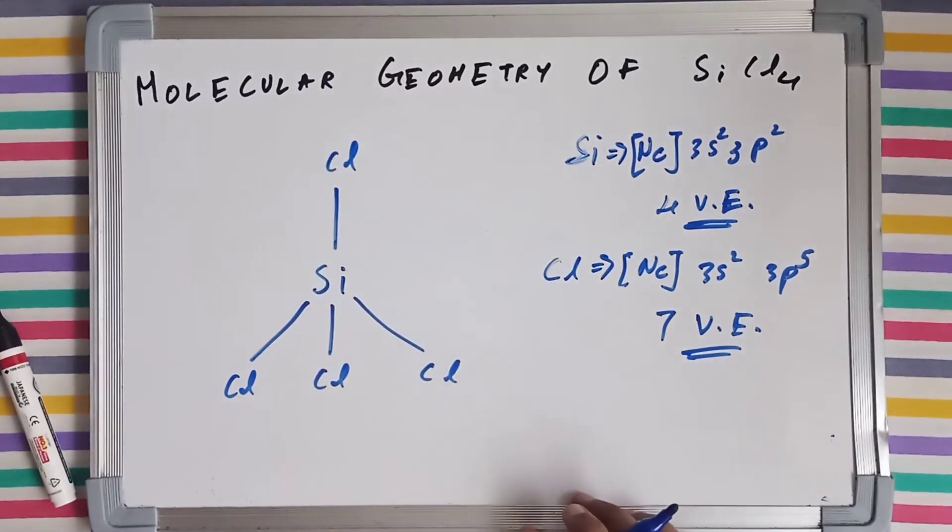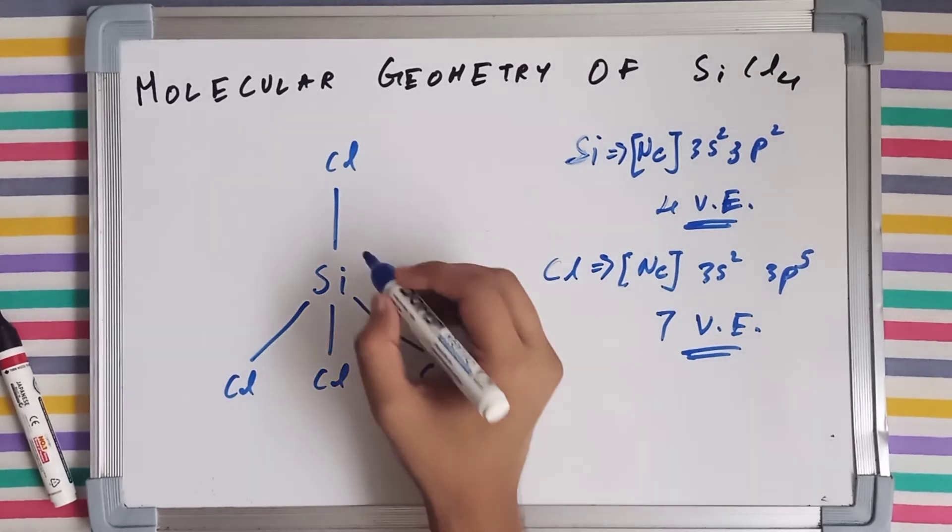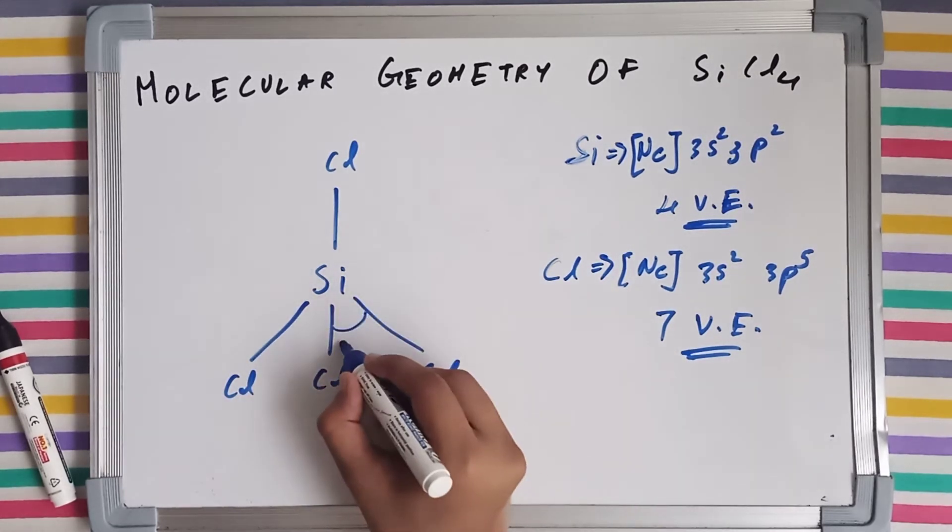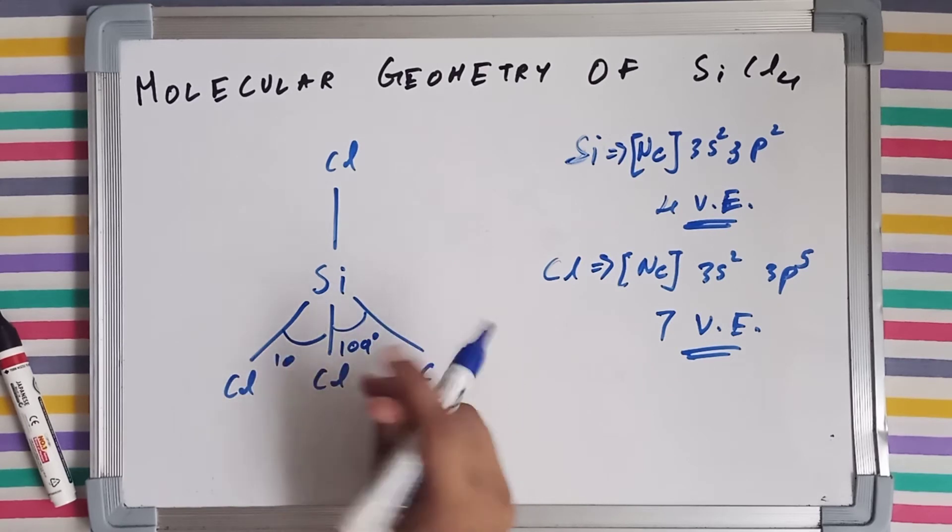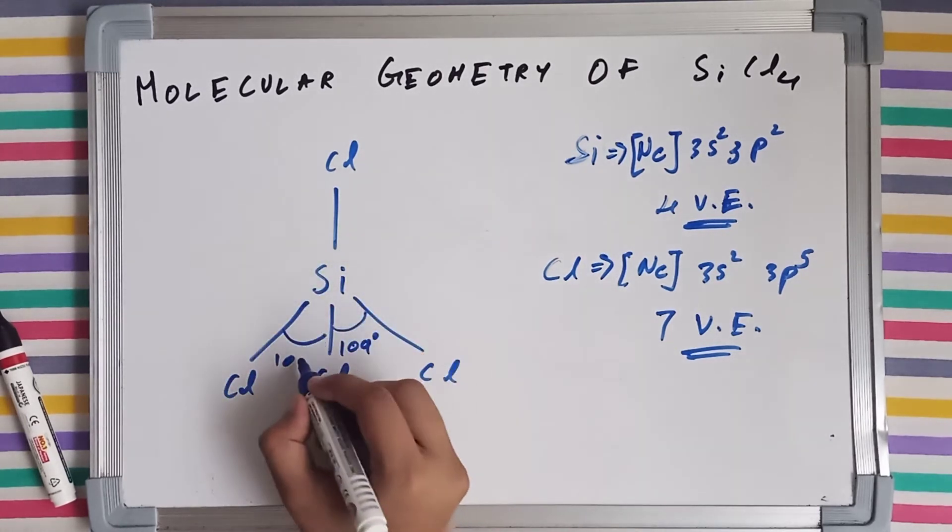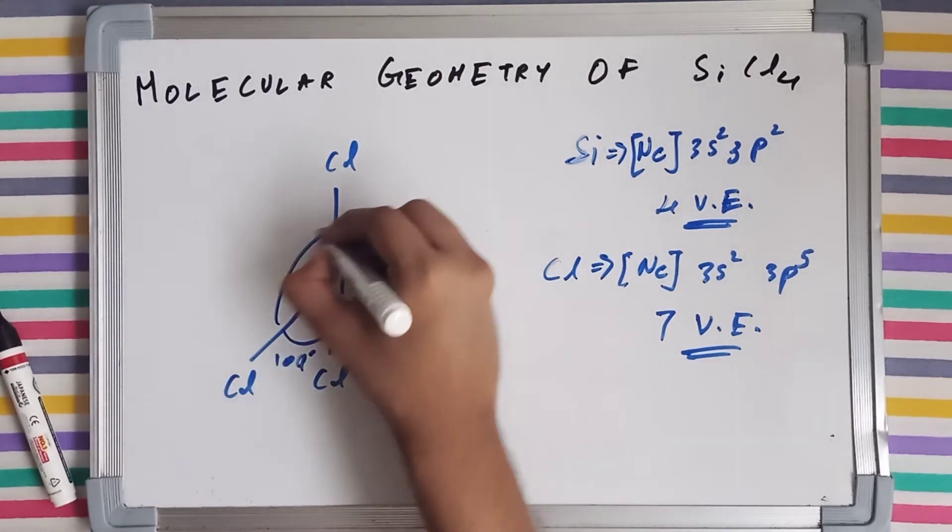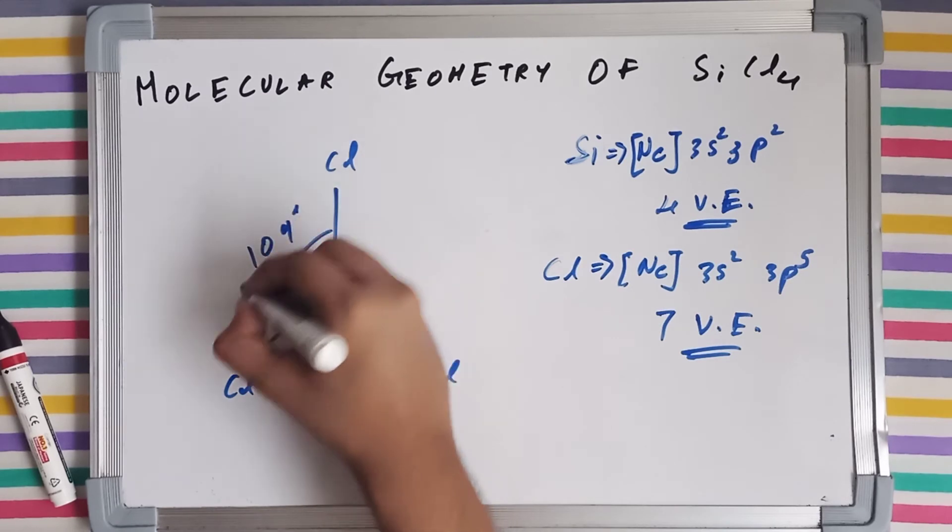Si-Cl-Cl-Cl-Cl. So this shape is called tetrahedral geometry, and the angles between each molecule will be 109 degrees. I mean, the angle between each bond will be 109 degrees. This is also going to be 109 degrees.